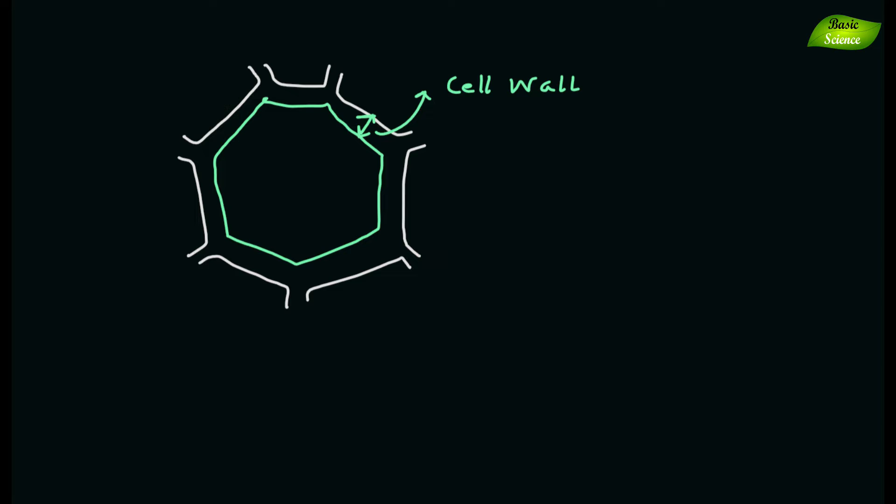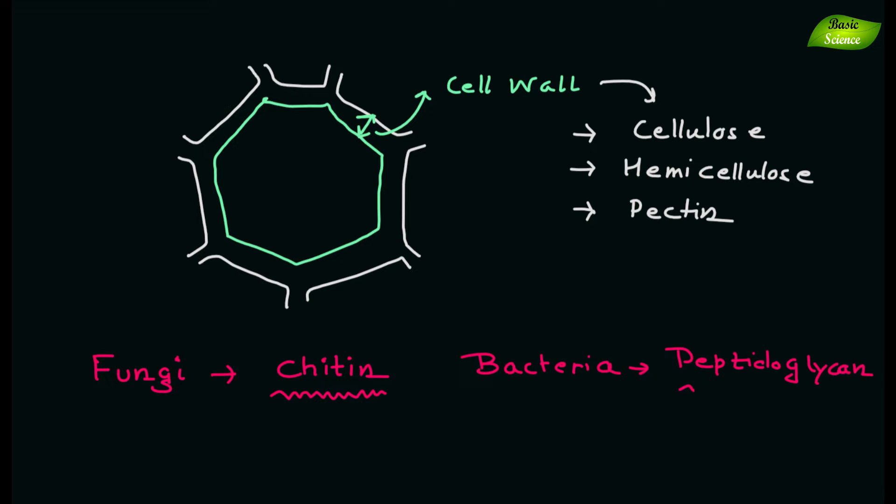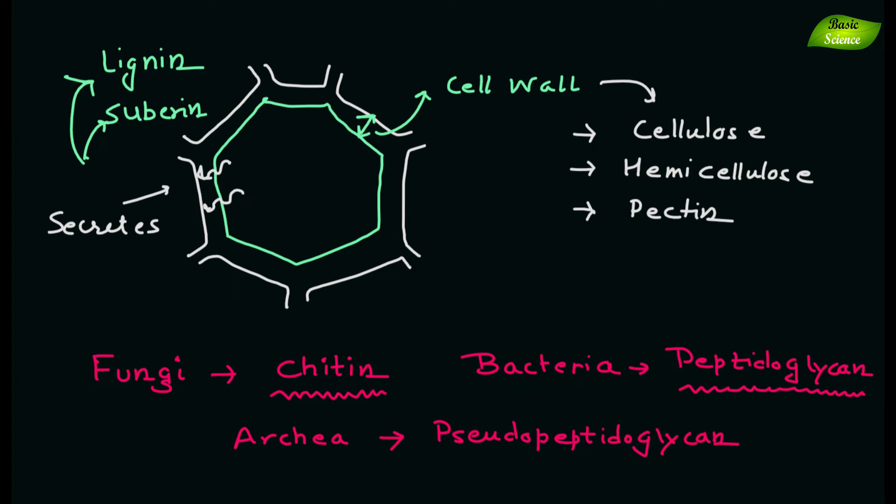Outside of the cell membrane, plant cells have cell walls comprised of cellulose, hemicellulose, and pectin. Their composition varies from that of fungi, whose cell walls are composed of chitin, bacterial cell walls composed of peptidoglycan, and archaeal cell walls composed of pseudo-peptidoglycan. Inside these cell walls, the protoplasm often secretes lignin or suberin as secondary cell wall layers.